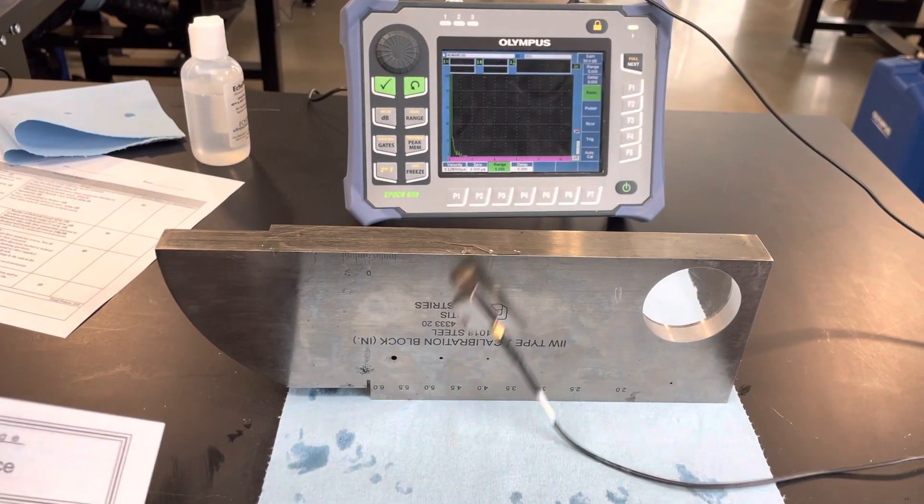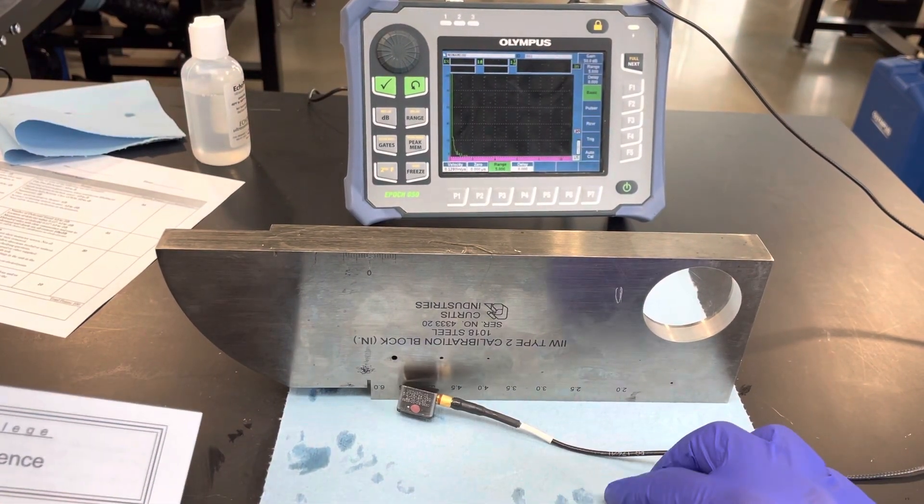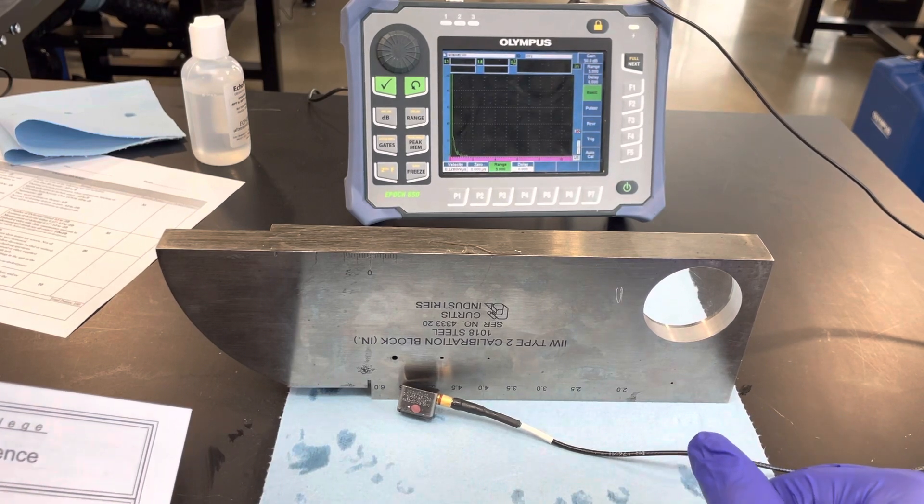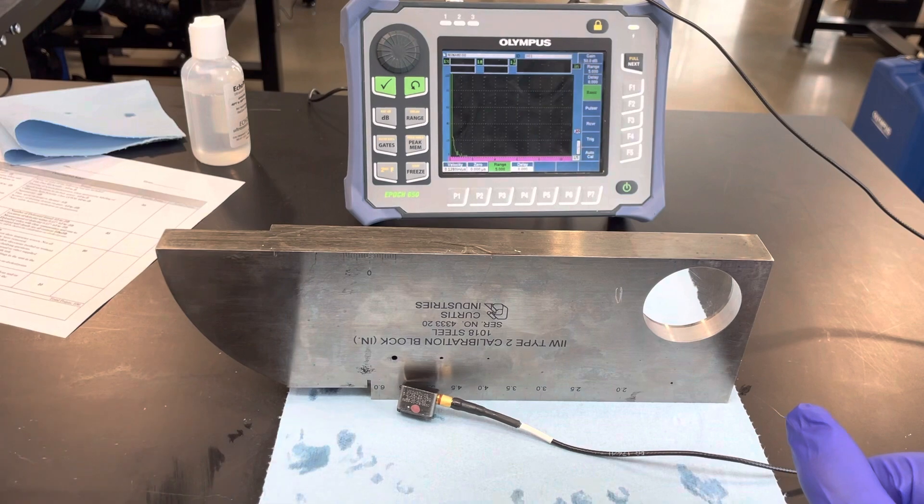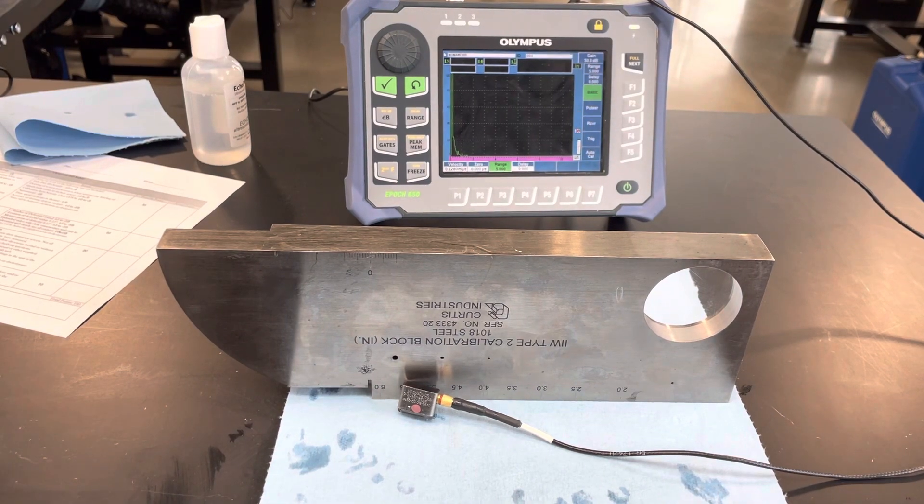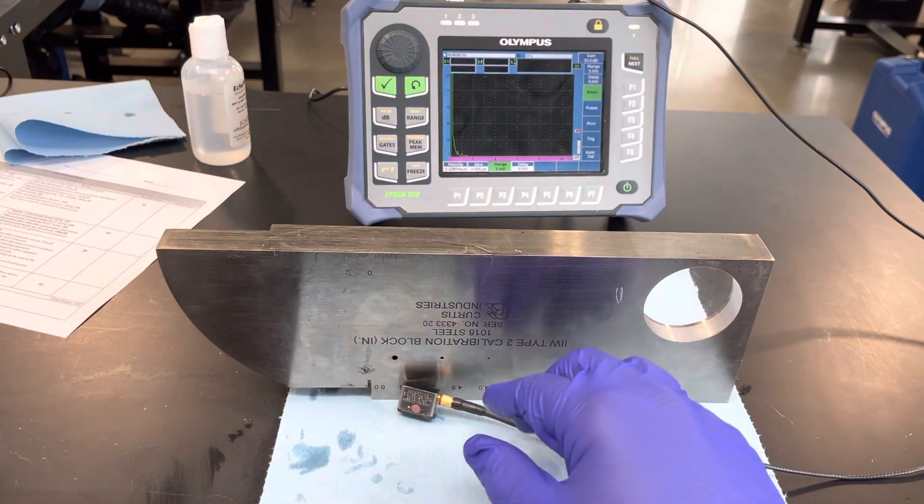All right, here we are doing an angle beam point of incidence check. The point of incidence is the center point of the sound beam exiting our transducer here.